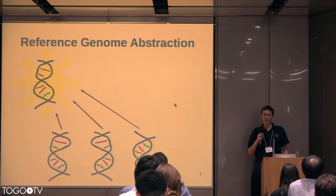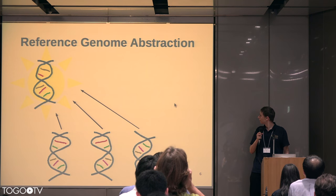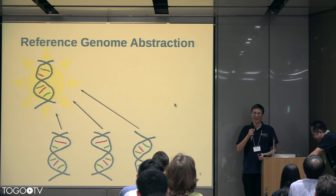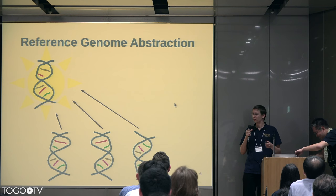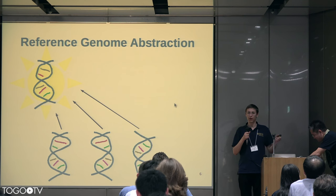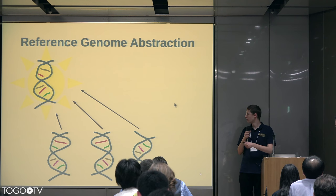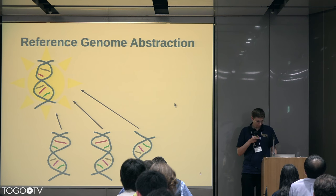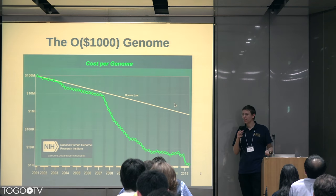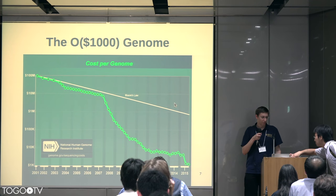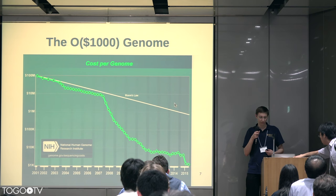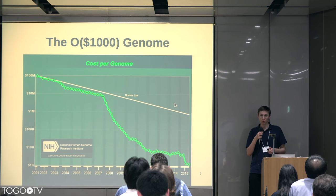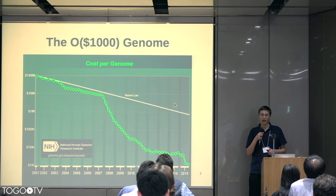Most of genomics right now is done in this linear framework. You have the reference genome — there's just one — and all the genomes that people work on are analyzed with reference to it. That's worked pretty well so far, but now we are getting into the era of the on-the-order-of-a-thousand-dollar genome. Sequencing is getting cheap, and so we're getting more and more genomes, and we're starting to see ways in which that abstraction doesn't really work.